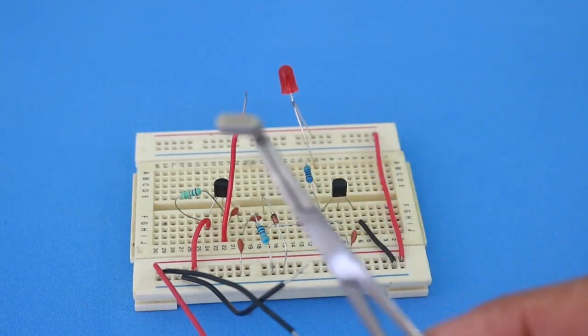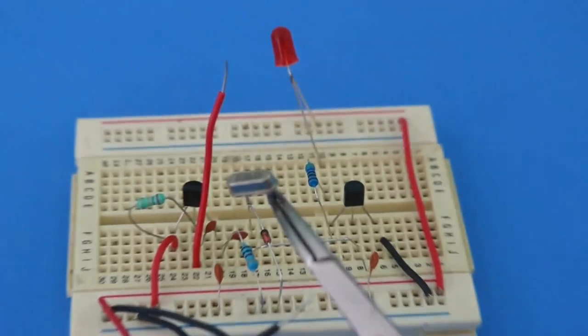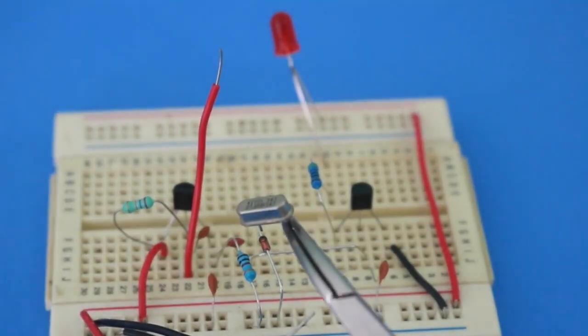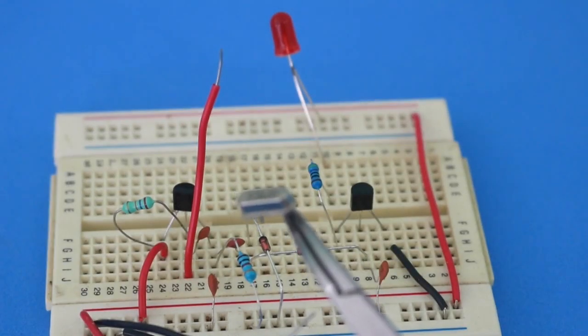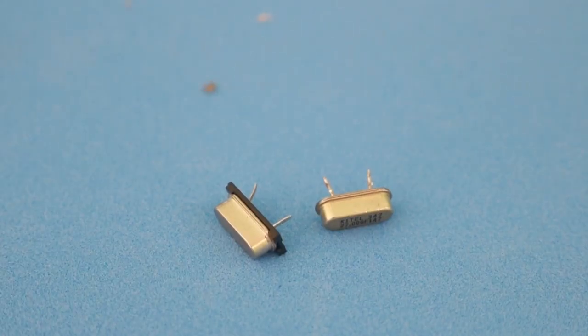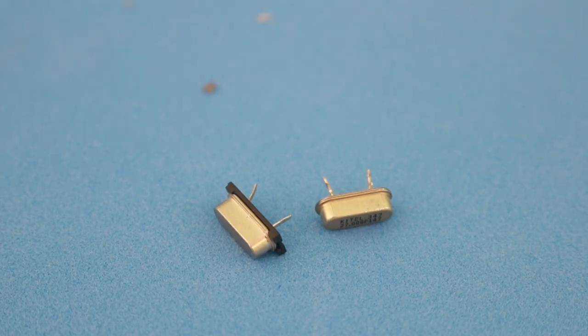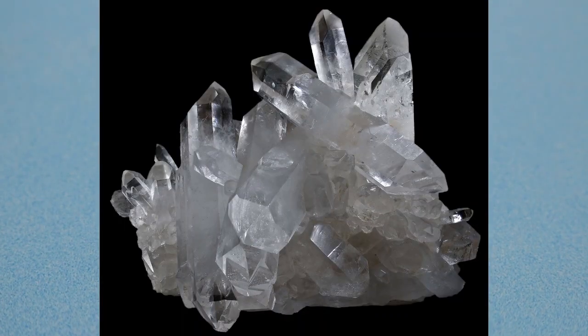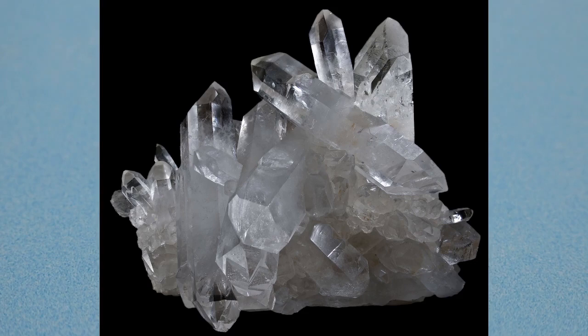As you may know, crystals are widely used in electronics for oscillator circuits. Crystals are electronic elements that are made usually of quartz, either natural or synthetic.